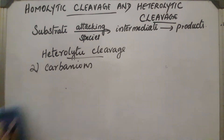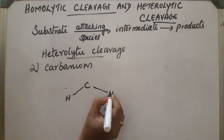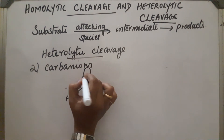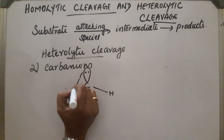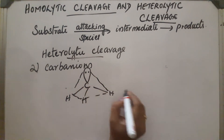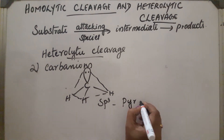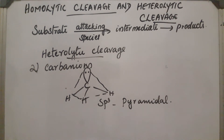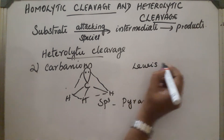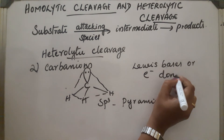The shape of the carbanion (CH3−): it is sp3 hybridized with three hydrogen atoms attached and an orbital containing a lone electron pair, giving it a pyramidal shape. These carbanions are electron rich, so they are called Lewis bases or electron donors.